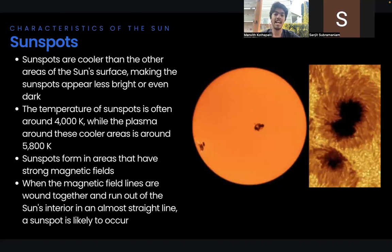Sunspots form in areas that have strong magnetic fields. The magnetic field lines can become twisted or contorted by various aspects of the solar atmosphere. Where the magnetic lines are wound together and run out of the sun's interior in an almost straight line upwards, a sunspot is likely to occur. This is because the tightly wound field lines decrease convection at the site, cooling it, and the field lines help keep the neighboring plasma from entering the sunspot.